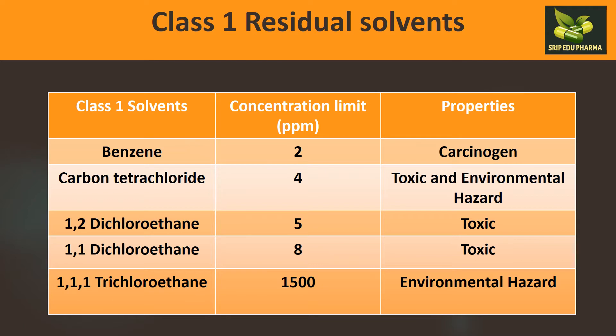Class 1 residual solvents are very toxic, so very little quantity is permitted. Examples include benzene — which is carcinogenic — with a concentration limit of only 2 ppm (parts per million); carbon tetrachloride at 4 ppm; 1,2-dichloroethane at 5 ppm; 1,1-dichloroethane at 8 ppm; and 1,1,1-trichloroethane at 1500 ppm. These solvents are toxic, carcinogenic, or produce environmental hazards.